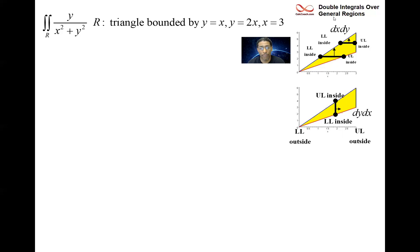You're good to go. Lower limit outside is zero, upper limit outside is three, lower limit inside is y equals x, and upper limit inside is y equals 2x. Don't put the y equals, just put the x and the 2x. Integrating with respect to y first is supposed to be better.